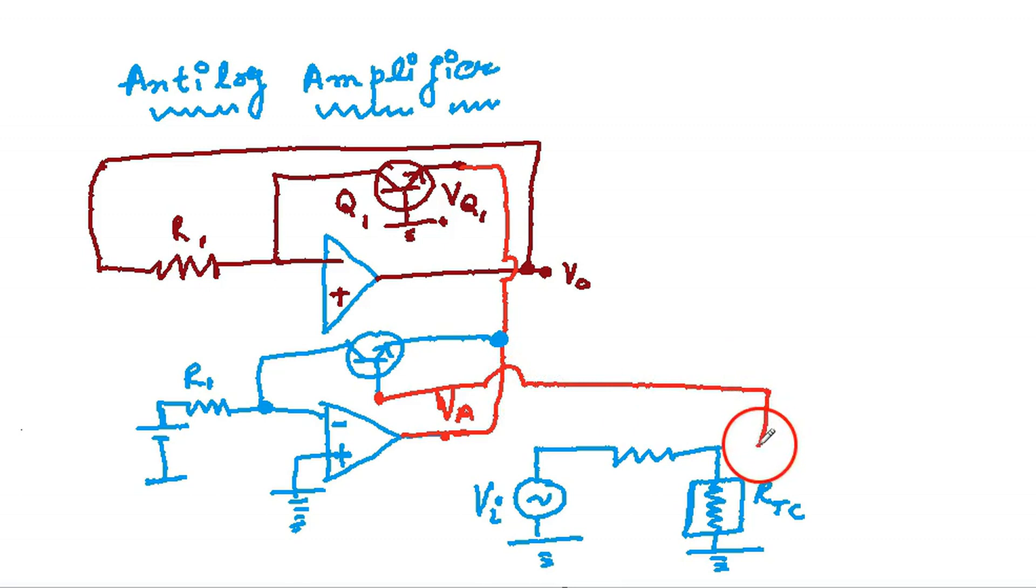The collector is attached to the inverting terminal, the emitter is connected to the emitter of Q1, and the base is not grounded here. It is attached to the input voltage through resistors. This is very important, this base is not grounded.